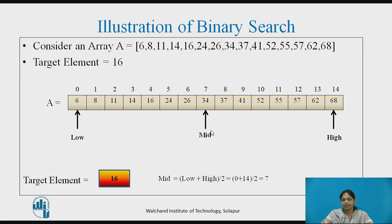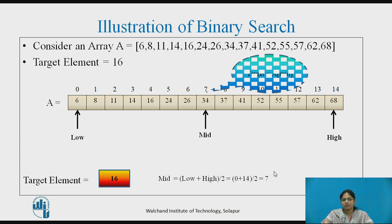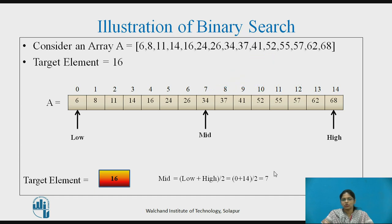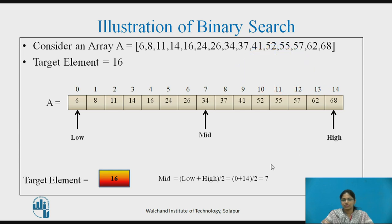Now we compare A[7] with the target element. The target value is lesser than A[mid], so we continue the search by adjusting high to mid minus 1. In the next iteration, high is adjusted to mid minus 1.